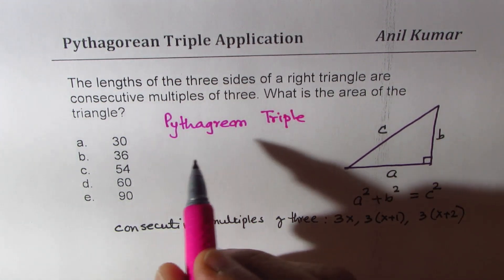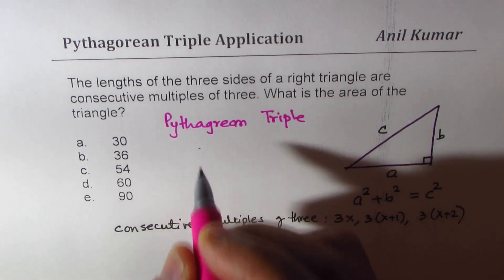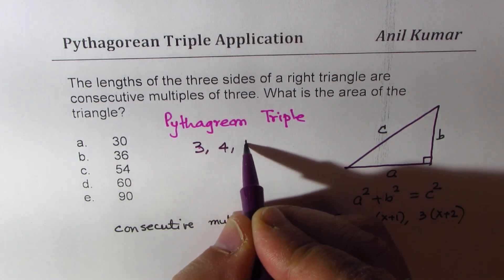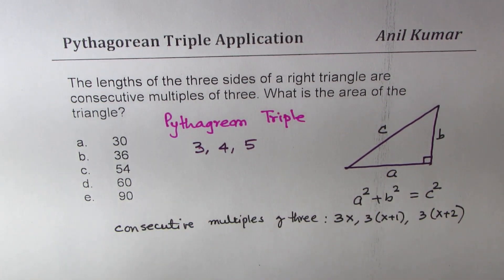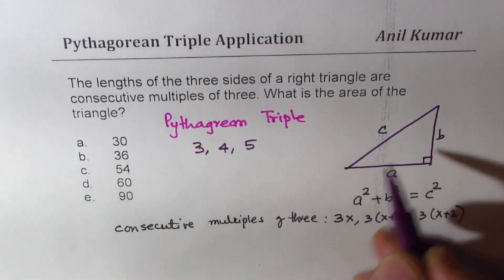We know that there is only one triple, which is consecutive, which is three, four, and five. These are consecutive numbers, right? So we could have sides as three, four, and five making a right triangle.